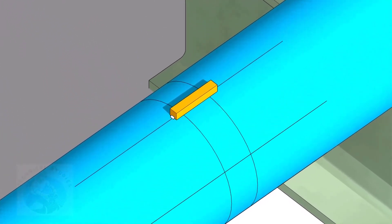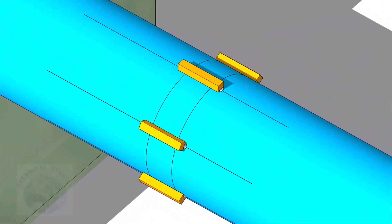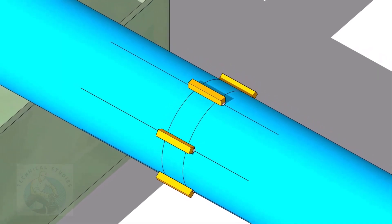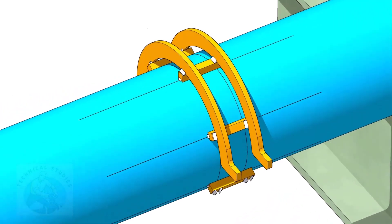Tack weld the square bars on the pipes as shown. Do not weld two big tacks. Tack weld the top half rings carefully on the square bars.